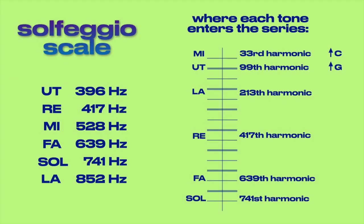In between these two solfeggio tones is Re at 417 Hz, and it enters the series very late at the 417th harmonic. As 396 and 528 are a sharp G and C respectively, 417 is a sharp A flat.